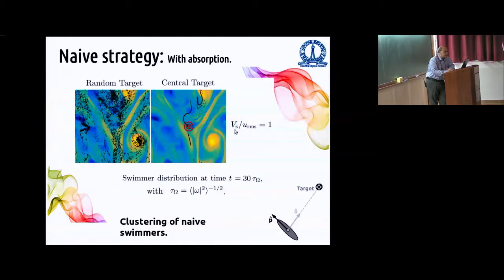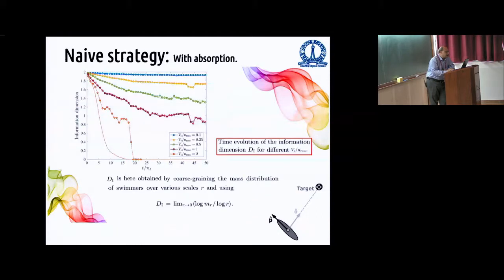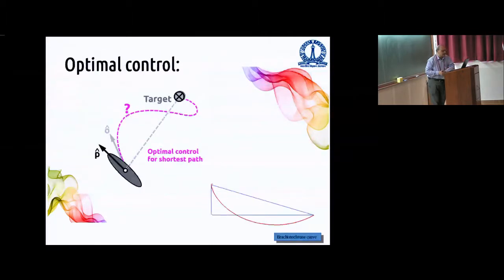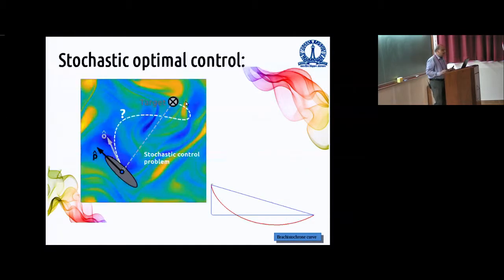So the naive strategy is leading to clustering and trapping of swimmers in vortical regions. If you change this parameter, then you get this level of clustering. The question is, you can work out various things. I will not dwell on them. Can we do better than that? And people in computer science, electrical engineering know these things. There's something called optimal control. So can we find some other optimal control path which takes us to the target in a way that looks superficially more stupid than the naive strategy, but actually ends up being cleverer? And because you have a turbulent flow, you use some form of stochastic optimal control.